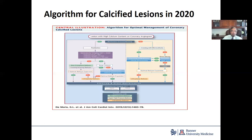If the calcium is superficial, then rotational and orbital atherectomy are the preferred modalities. If the calcium is deep, then lithotripsy is the mode of choice. On the other hand, if the calcification is not as extensive, then a scoring balloon or a non-compliant balloon to ensure optimal balloon expansion should be the strategy. If after a non-compliant balloon optimal expansion is not obtained, then moving to a lithotripsy balloon or even atherectomy at that point is a reasonable next step.